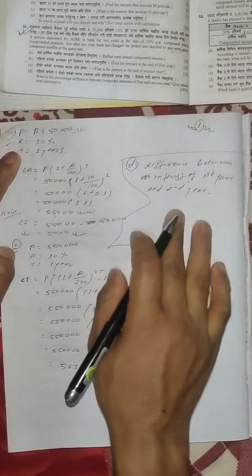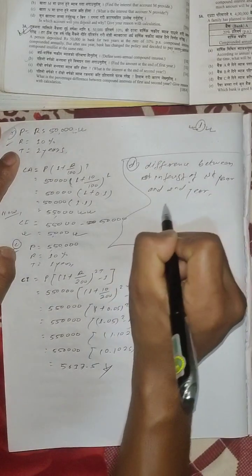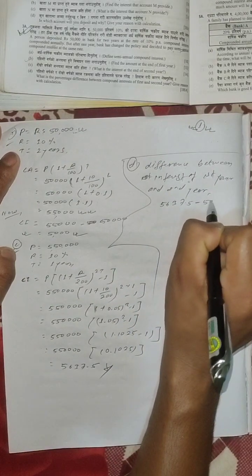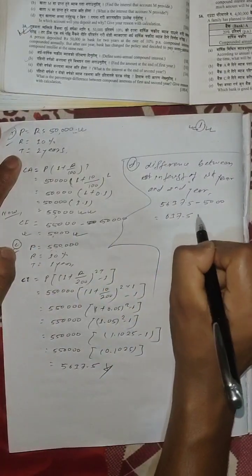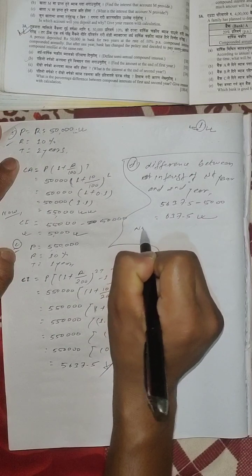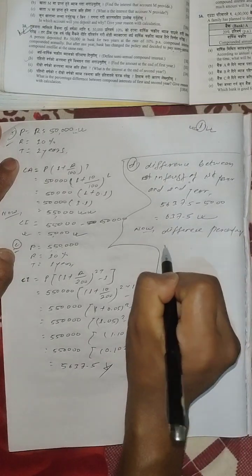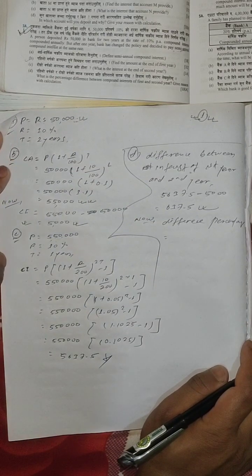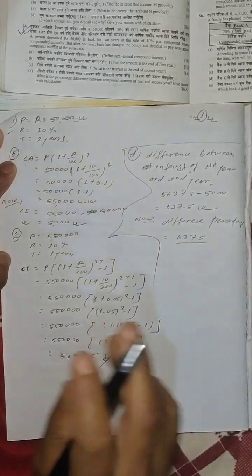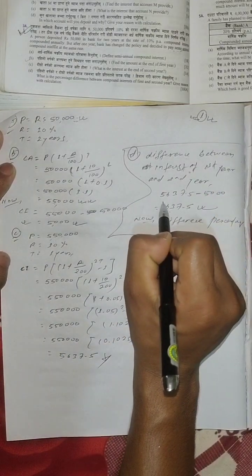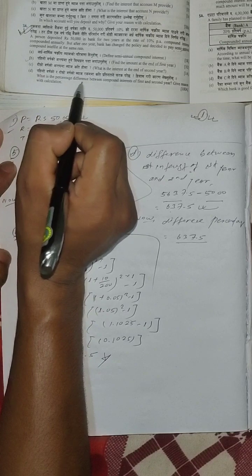I will show you the difference between the three. Okay, the difference is: 5,637.5 − 5,000 = 637.5 Rs. The difference is the amount, and the percentage is the amount. Difference percent is equal to — the difference is the amount. The amount is equal to 37.5. How much is 5,637.5 − 5,000?